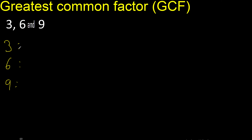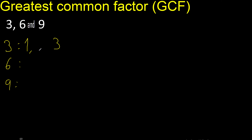Factors first, always start with 1. 3 divided by 1 is 3. Next, 2 — cannot be divided by 2. Next 3, 3 is here. Factors.